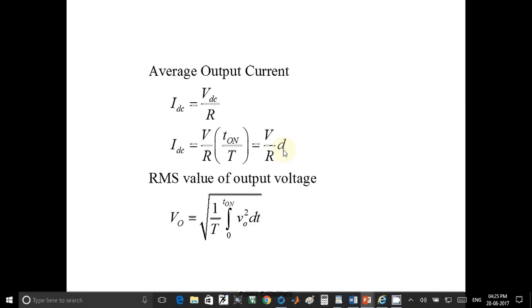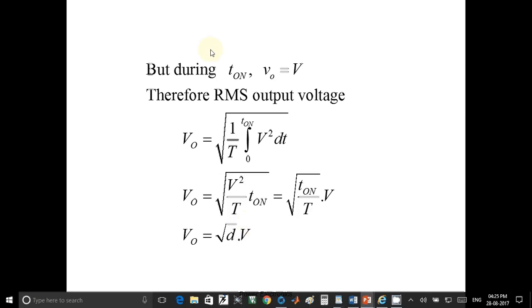Now calculating RMS value of output voltage. Vrms is given by square root of 1 upon T integration from 0 to T on, V output square dt. In case of T on, V output is V. So formula is Voutput equals square root of 1 upon T integration from 0 to T on, V square dt.